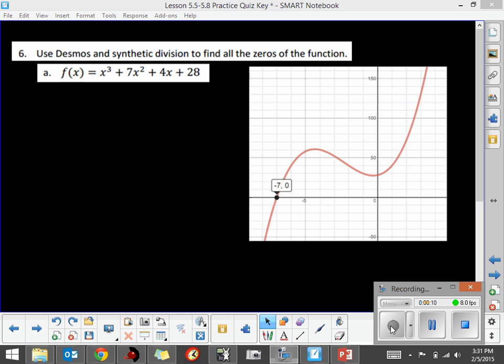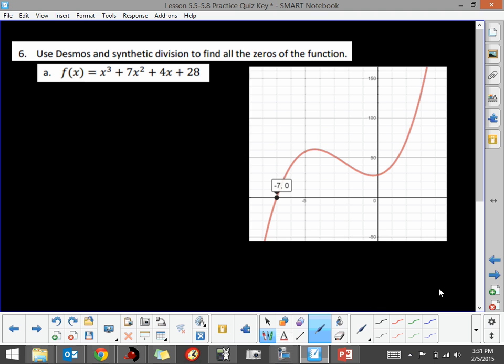So the first thing is, I put that in Desmos, and I found through the use of our Desmos technology that there is a crossing of the x-axis, so there is a zero to this function at negative 7. We're going to use that zero to take this third-degree polynomial and depress it to a second-degree polynomial and find the other zeros from there.